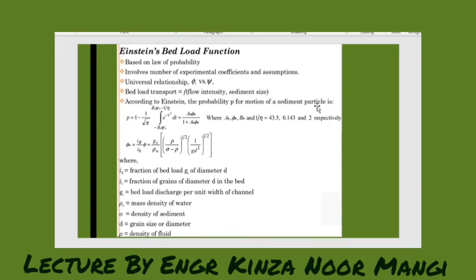And according to Einstein, the probability P for the motion of the sediment particles - so this is basically we will calculate the probability, meaning number of chances for the motion of the sediment particles, and they have integrated and this is the formula after integration we get.